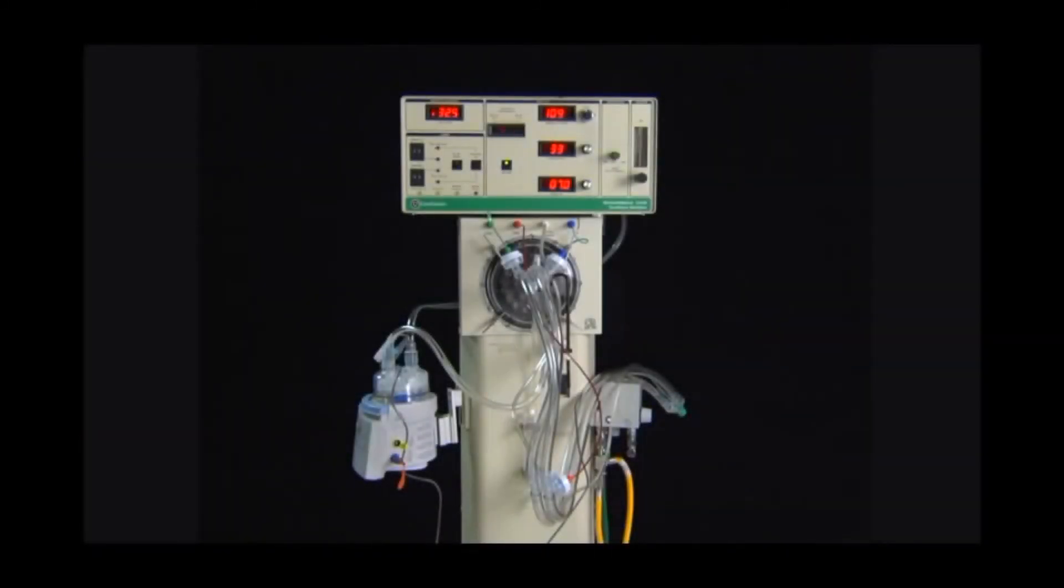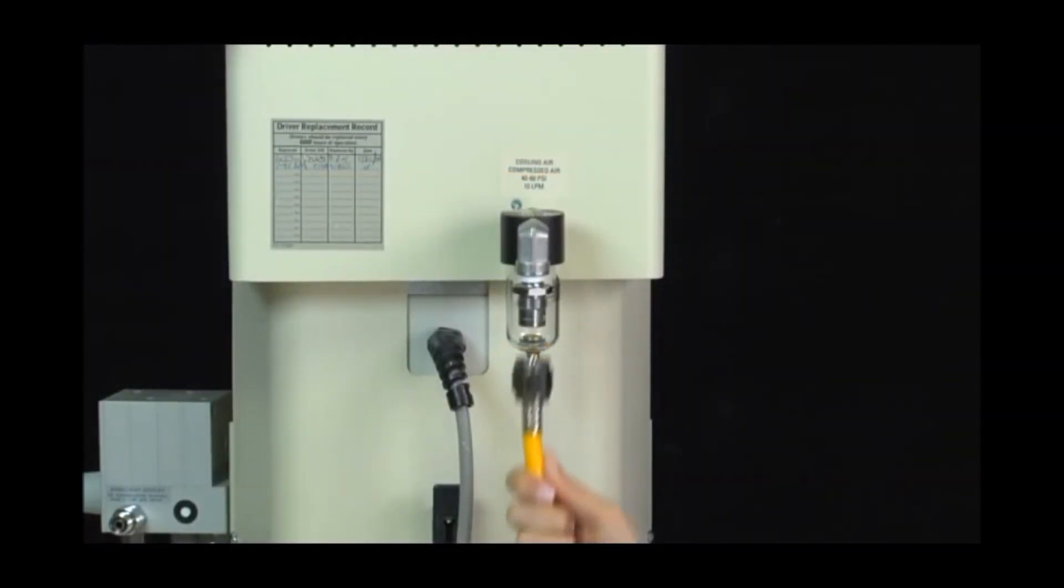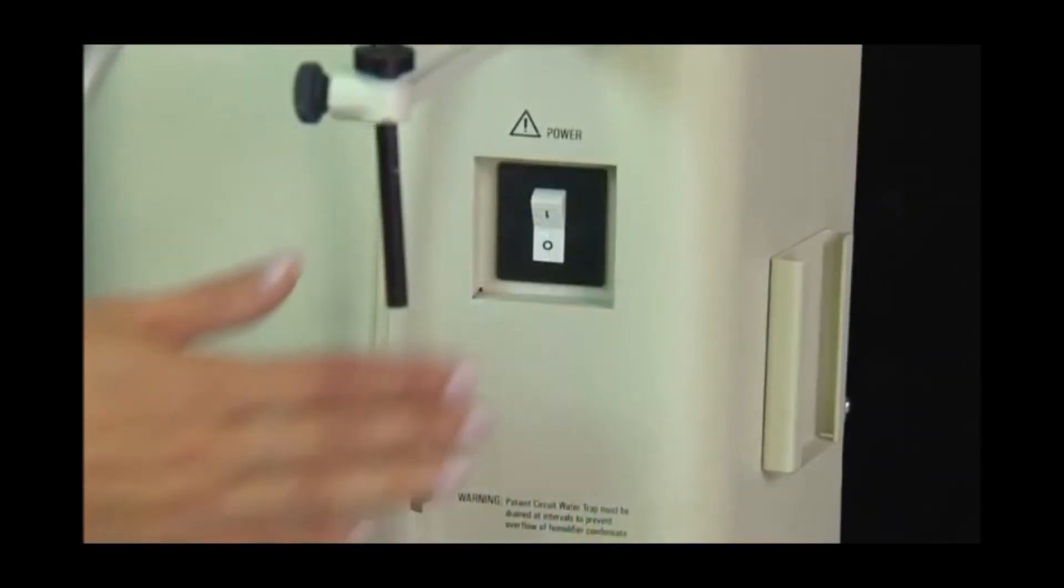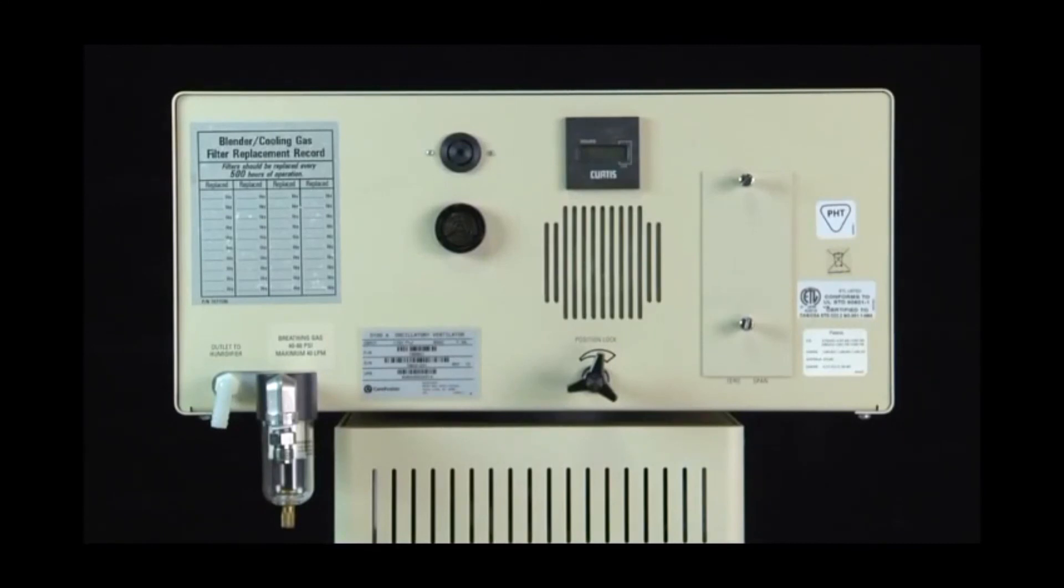The 3100B high-frequency oscillatory ventilator is now ready for the operational verification and startup procedure. The operational verification and startup procedure must be performed before using the ventilator. If the 3100B fails any part of this procedure, contact CareFusion Technical Support. Connect all source gases to the ventilator and turn on the main power switch. Ensure that the stopcock to the water trap is closed and the cooling fan at the rear of the driver enclosure is operational and clear of obstruction.